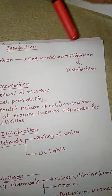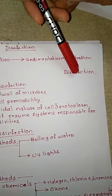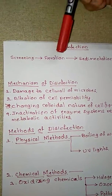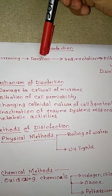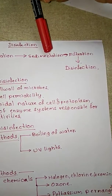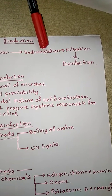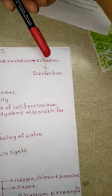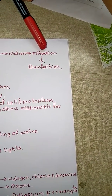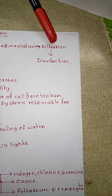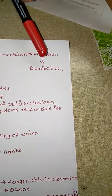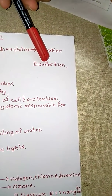In the treatment plant, we have seen different treatment units: screening, aeration, sedimentation, filtration, and disinfection. In screening, we removed larger floating elements. In aeration, we introduced air into the water. In sedimentation, we removed suspended and settleable particles. Fine particles not removed by sedimentation were removed in the filtration process. After filtration, today we look at disinfection.